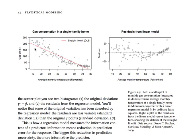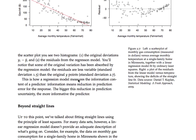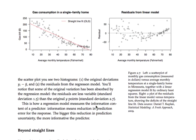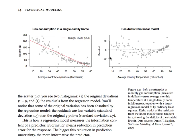The straight line fit using ordinary least squares — the equation is $226 minus 3 times temperature plus the residual — doesn't fit the data especially well. We can diagnose that in this residual plot: below 20 degrees most residuals are positive, between about 35 and 60 degrees most residuals are negative, and above about 65 degrees virtually all residuals are positive again.